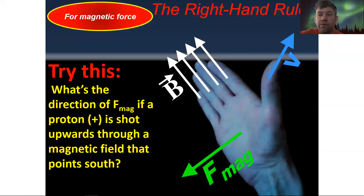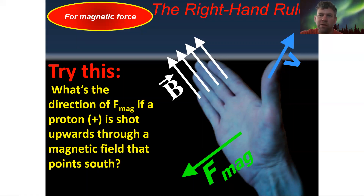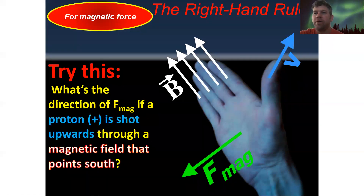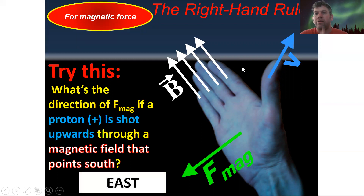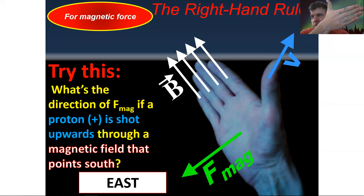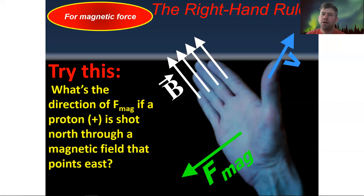Next example: what's the direction of the magnetic force if the proton is shot upward through a magnetic field that points south? Proton going up → thumb pointing up. Magnetic field south → fingers pointing south. With thumb up and fingers south, the palm faces east. So the magnetic force is directed east.